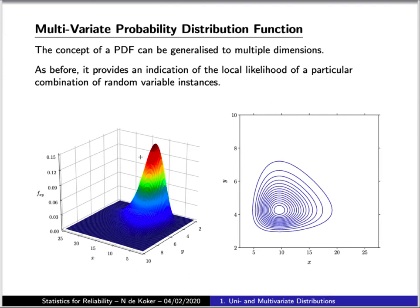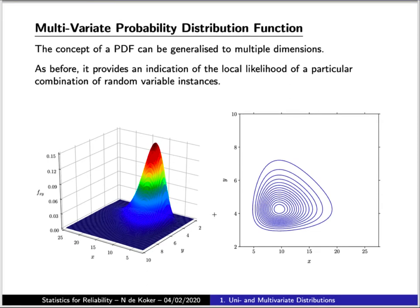Now this representation can be simplified even further by simply showing a set of contour lines as I'm doing here. Now what I'm showing here is the multivariate probability distribution function that would result for two random variables that are not normally distributed. In fact, in this case.